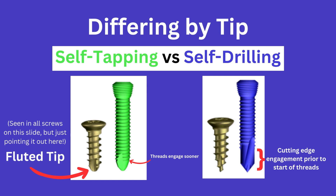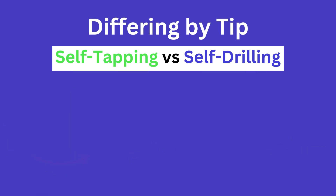A big thing to notice with these is where the threads begin. With the self-tapping, you can see that the thread engagement starts sooner before the small cutting edge of the fluted region engages. Whereas with the self-drilling, the large cutting edge engages prior to the threads, making it primarily a self-drilling screw.